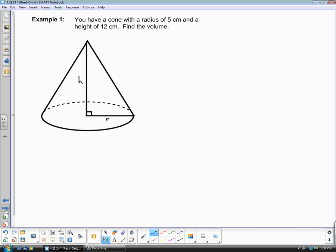The first example that we are going to do is you have a cone with a radius of 5 centimeters. So we're going to replace the r with 5 and a height of 12 centimeters. So we can replace the h with 12.